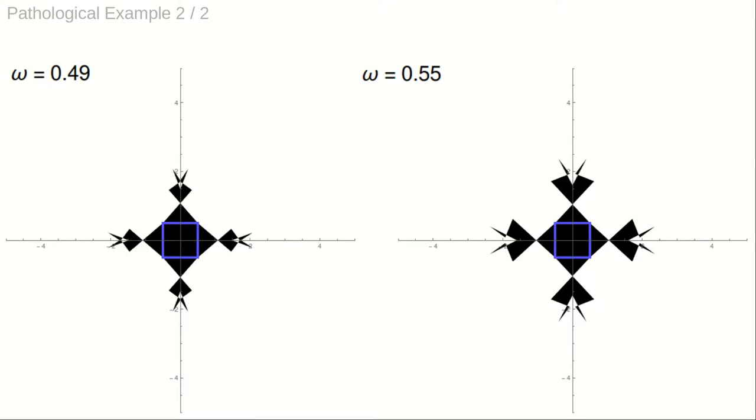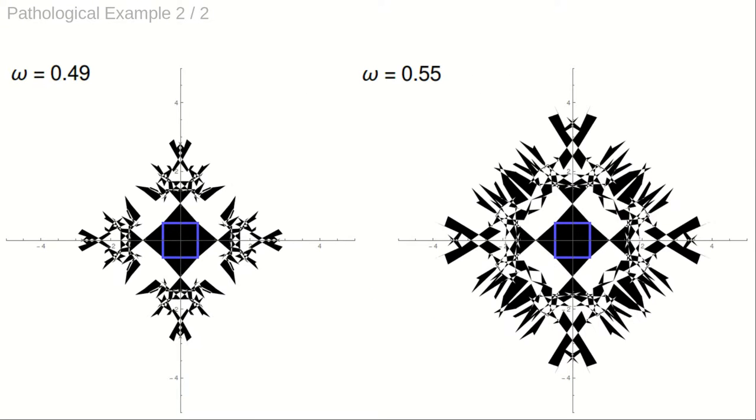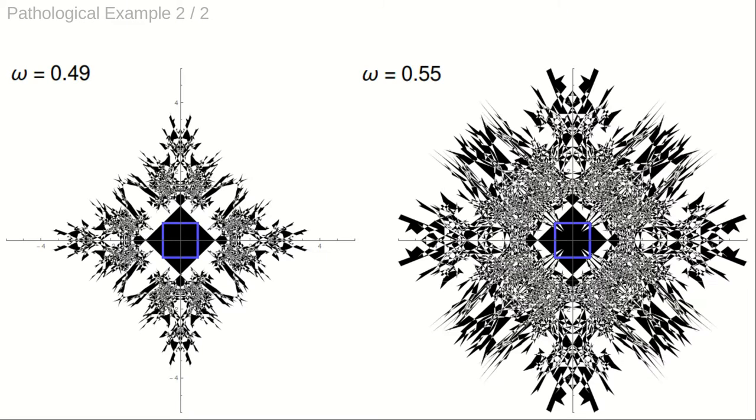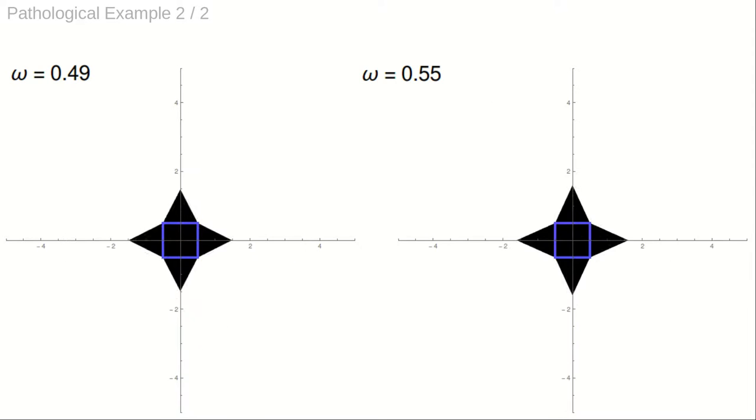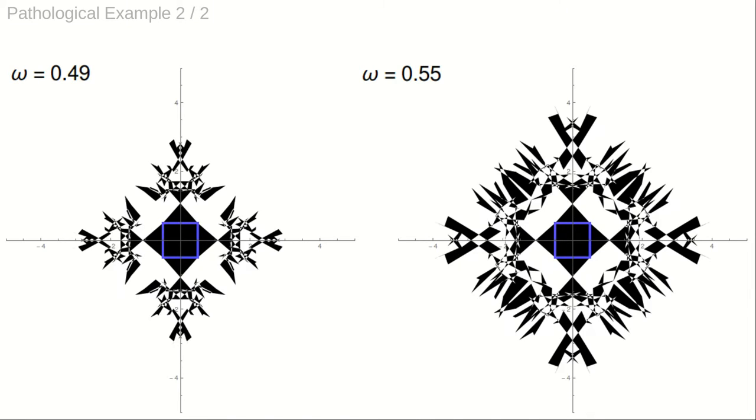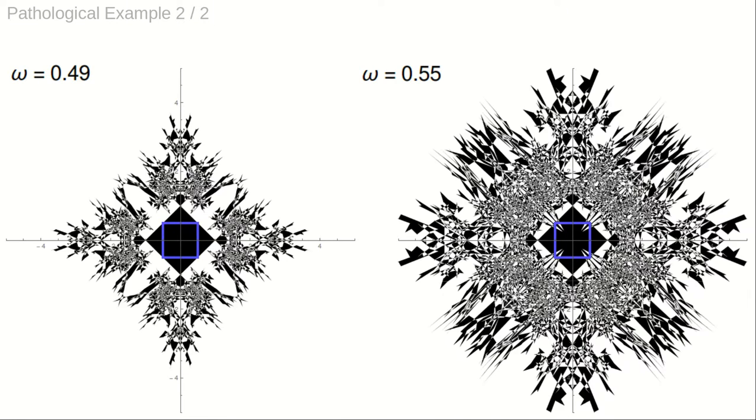The animations demonstrate that for a tension parameter below 0.5, the limit curve results in a bounded area. A tension parameter of 0.55 results in a sequence of curves that do not enclose a converging area.